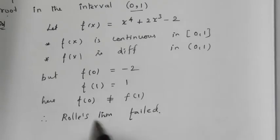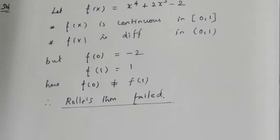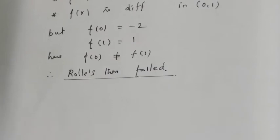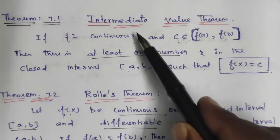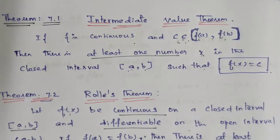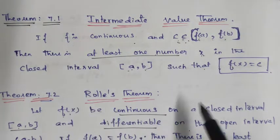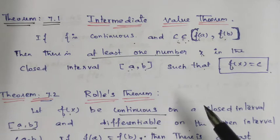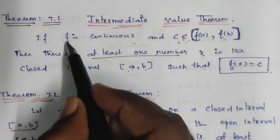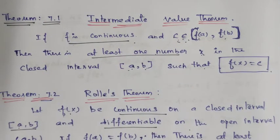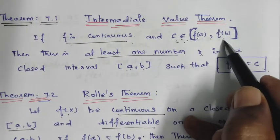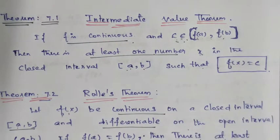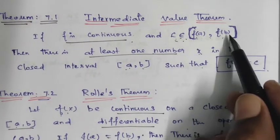Since f(0) ≠ f(1), Rolle's Theorem fails. So instead we use the Intermediate Value Theorem. f(x) is continuous, and c belongs to the interval between f(a) and f(b).